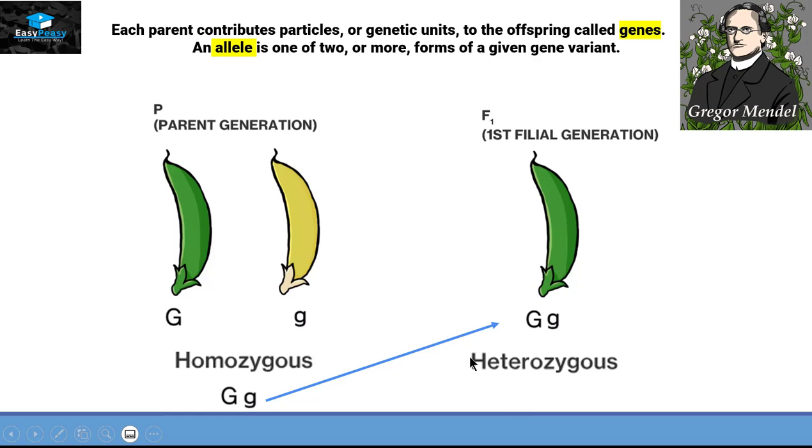Now we have two different types of categories. One category is the parent, that is the green color or yellow color, so we can call it a phenotype. The second category belongs to the genes as this parent generation and the first filial generation have the same color but have different genes, so they have different genotypes.